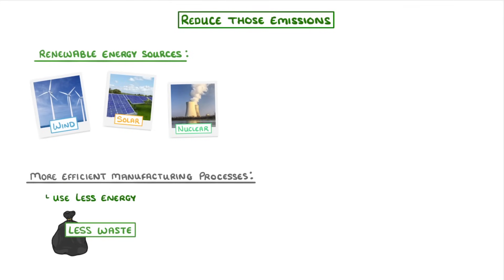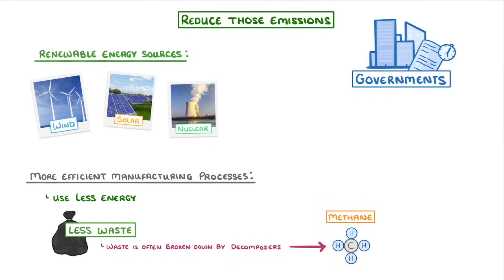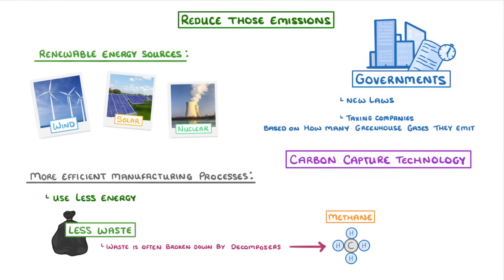Reducing waste is actually really important, because waste is often broken down by decomposers, which can release methane. Governments can also help, for example by introducing new laws, or taxing companies based on how many greenhouse gases they emit. There's also something called carbon capture technology available, that can capture the carbon dioxide formed when we burn fossil fuels before it can escape into the atmosphere. It can then be stored deep underground, in cracks in the rocks, such as old oil wells, where it can't escape to the environment.